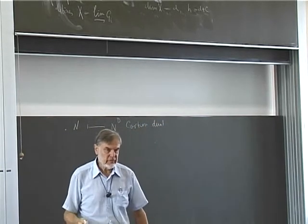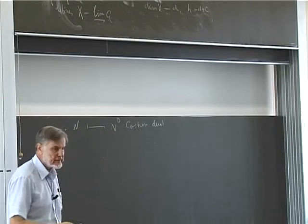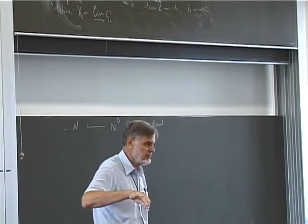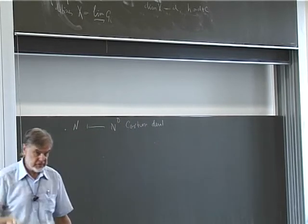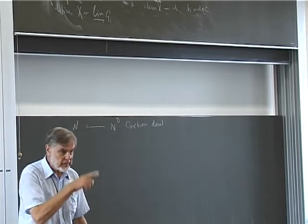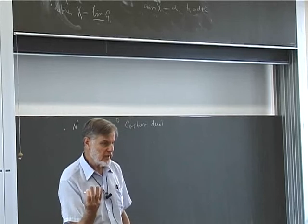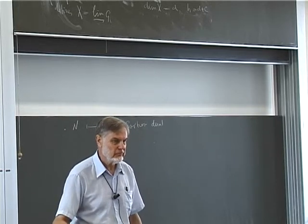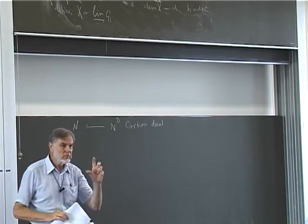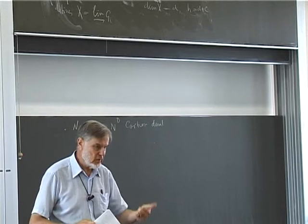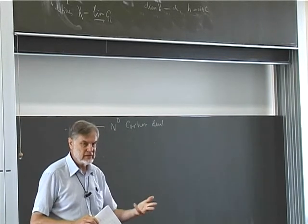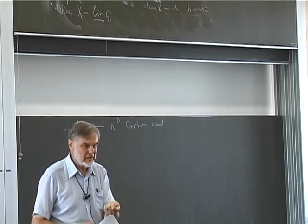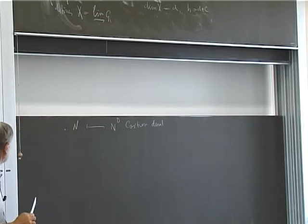What is the Cartier dual? N is finite flat, so N is the spectrum of an algebra. This algebra we can dualize as linear maps into the base ring — that gives you an algebra of the same rank because it's finite flat. The multiplication on the original algebra becomes a co-multiplication in the dual, and the co-multiplication becomes a multiplication. So this is the spectrum of a bi-algebra. The dual of that automatically has all the same data with multiplication and co-multiplication interchanged — and that is the Cartier dual.